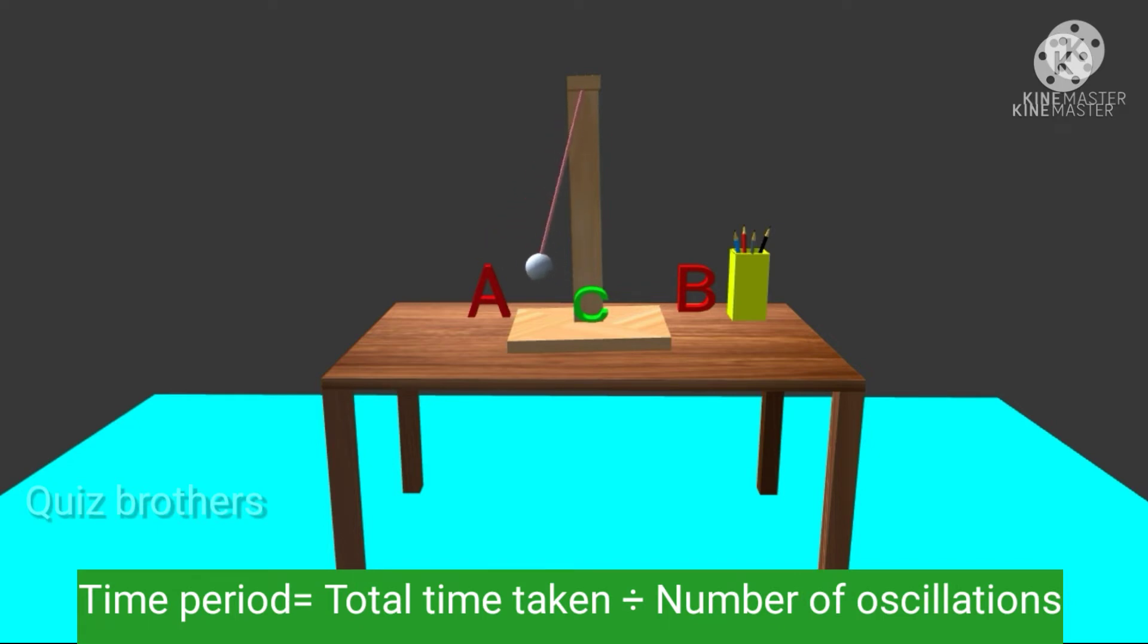Time period is equal to total time taken divided by number of oscillations.